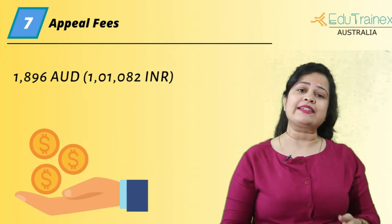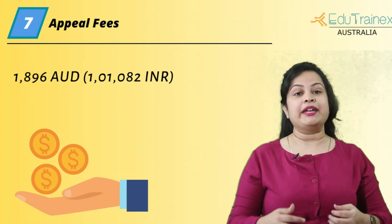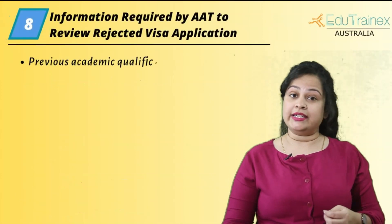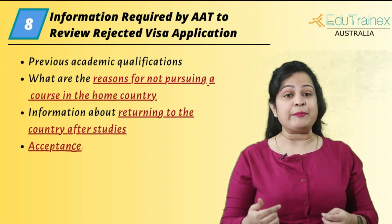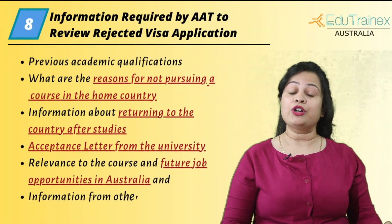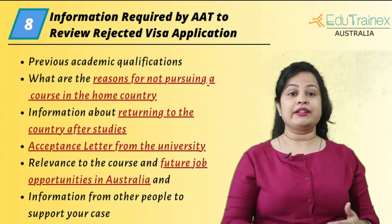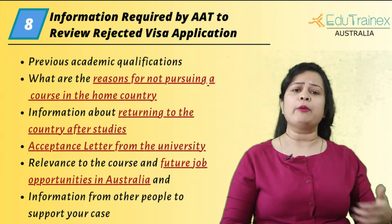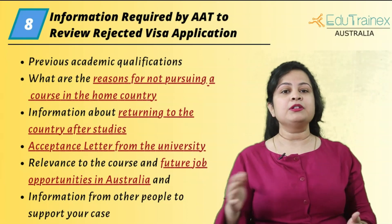Students with financial needs can get up to 50% fee waivers. These fees need to be paid before the deadline while submitting the application. When appealing to the AAT, you can share additional information with AAT officers to support your visa application, such as previous academic qualifications, reasons for not pursuing a course in the home country, information about returning to the country after studies, acceptance letter from the university, relevance to the course and future job opportunities in Australia, and supporting information from other people.